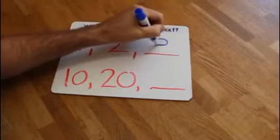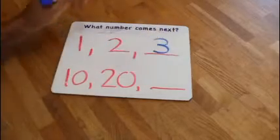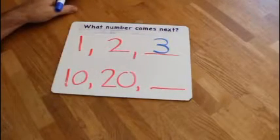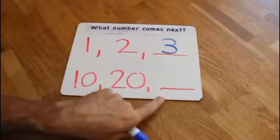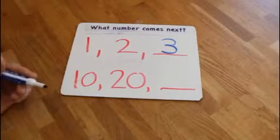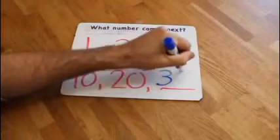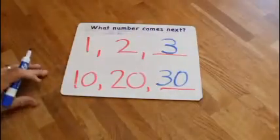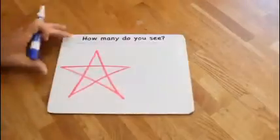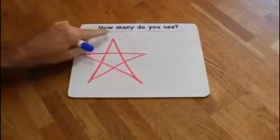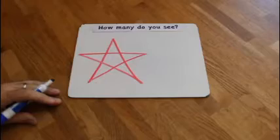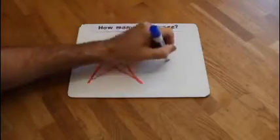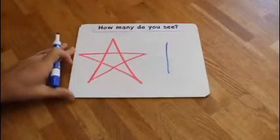Ten, twenty, thirty. How do we write a thirty? Three for the tens and a zero for the ones - thirty. How many do you see? One. How do you write a one? Straight line down, one is fun, that's the way to write a one.